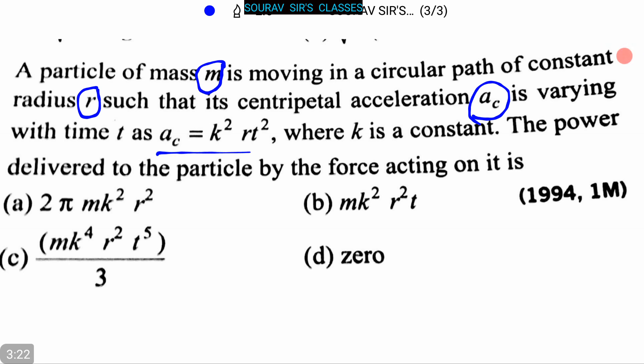equal to k square rt square. It is given that ac is equal to k squared r t squared, where k is a constant.